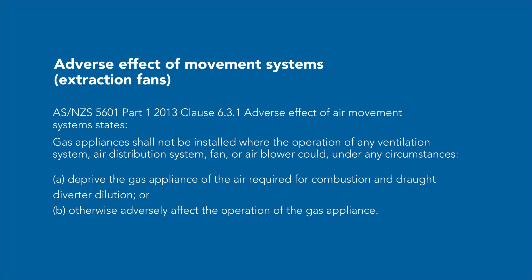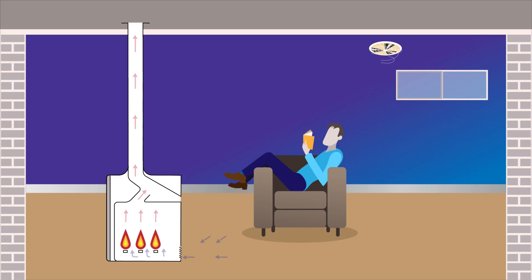Refer AS NZS 5601 Part 1 2013 Clause 6.3.1. Adverse effect of air movement systems states gas appliances shall not be installed where the operation of any ventilation system, air distribution system, fan or air blower could under any circumstances deprive the gas appliance of the air required for combustion and draft diverter dilution or otherwise adversely affect the operation of the gas appliance.